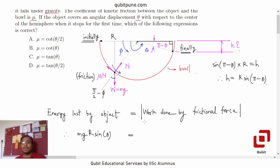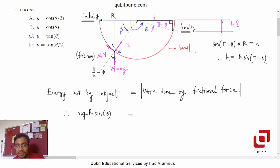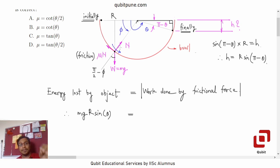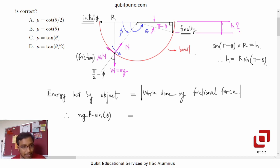Now, what is the work done by the frictional force? To find that, we first consider an arbitrary angular position phi and estimate the value of the frictional force at that location. This is the free body diagram. What portion of the weight contributes to the normal reaction? Let me erase this indicator arrow. Consider the right triangle with radius as the hypotenuse.